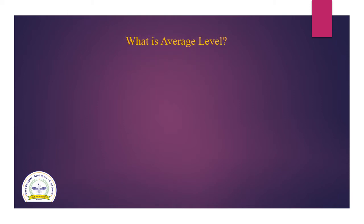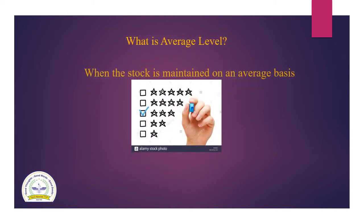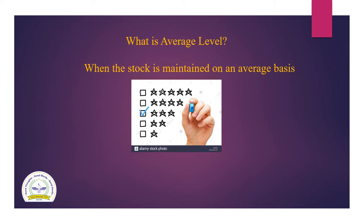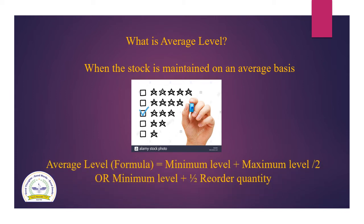What is average level? When the stock is maintained on an average basis, it is a balanced solution — not more, not less, just average. The formula is: minimum level plus maximum level divided by 2. Alternatively, it can be calculated as minimum level plus half of re-order quantity.